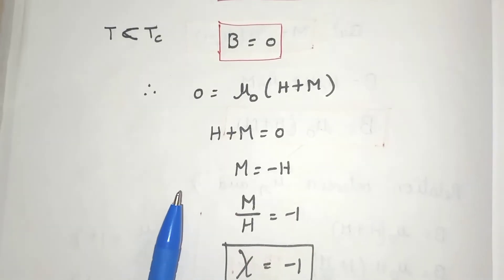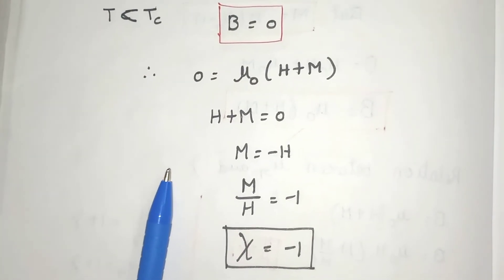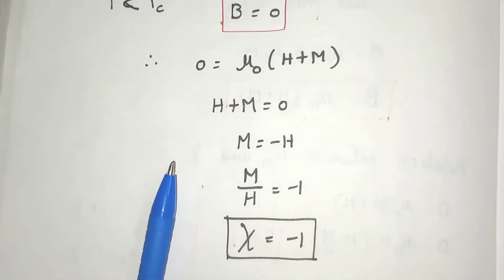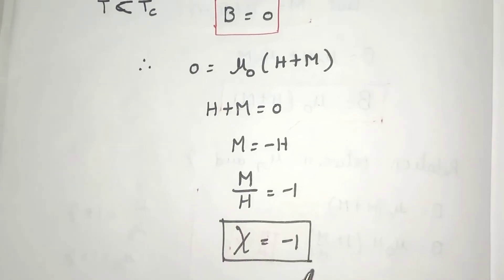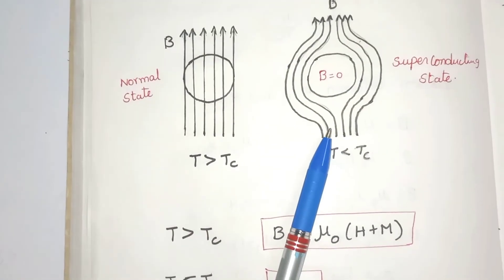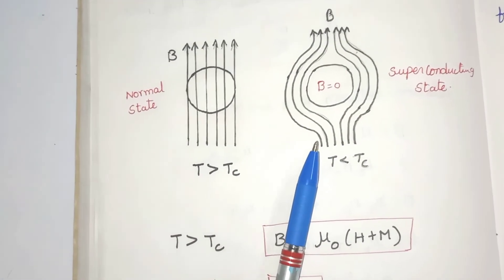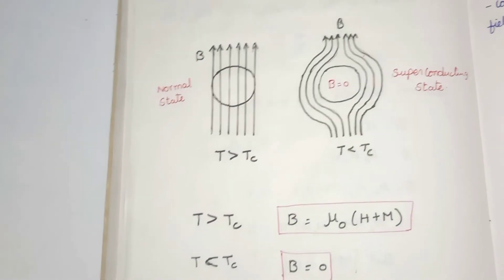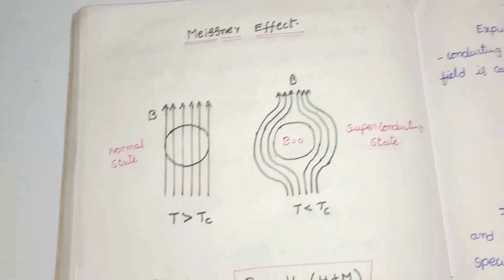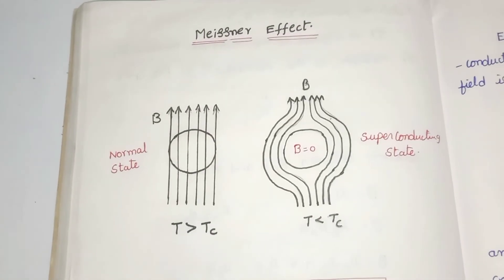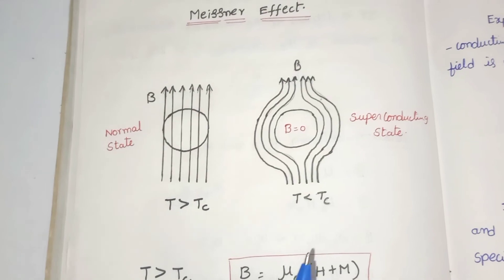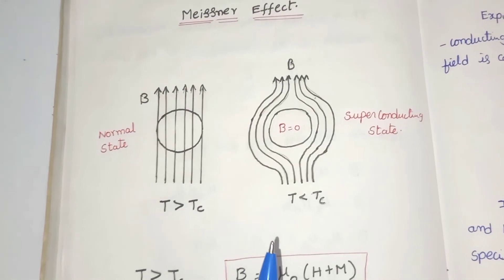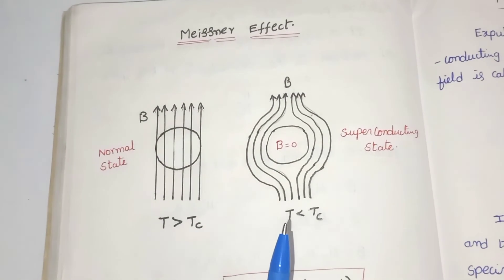For different types of magnetic materials, diamagnetic material has a negative and small susceptibility. But in the superconducting state, χ = −1, which means the material is a perfect diamagnetic material. So Meissner's statement is: when the material is in the superconducting state, the magnetic lines of force are expelled — this is a perfect diamagnetic material. This is the Meissner effect.